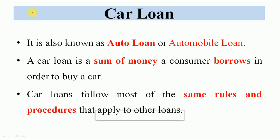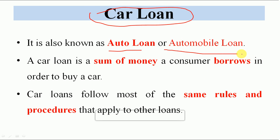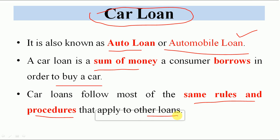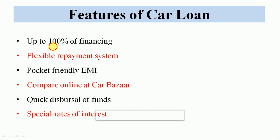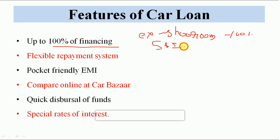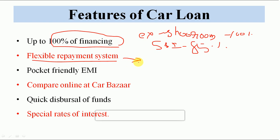Uske baad hai car loan. Car loan bhi ek consumer loan hi hai — isko auto loan ya automobile loan bhi bolte hain. Jab consumer car kharidne ke liye bank se loan leta hai, that is known as car loan. Car loan ki jo rules hoti hain, wahi same rules aur procedure follow karna hota hai. Car loan mein aapko 100% tak financing ho jati hai. SBI aapko on-road price ka 85% de deta hai, aur ICICI bank, HDFC bank aapko ex-showroom price ka 100% de deta hai.